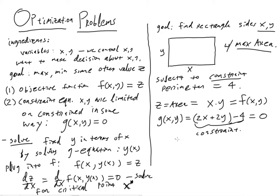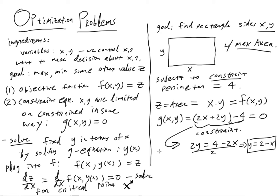What we do is solve for y here. We move the 4 over and the 2x over to the other side, then divide by 2, and we get y is equal to 2 minus x. That is my function of y in terms of x. Then we take it and move it into our area equation: z is equal to x times (2 minus x), where (2 minus x) represents y of x, and we plug that into our objective function.